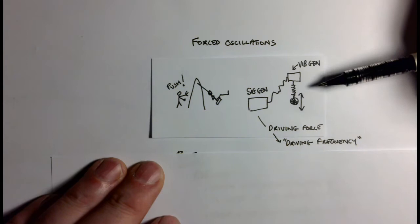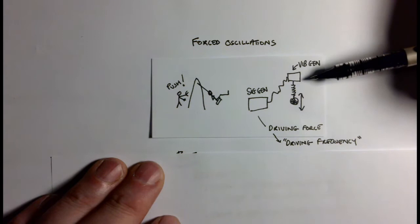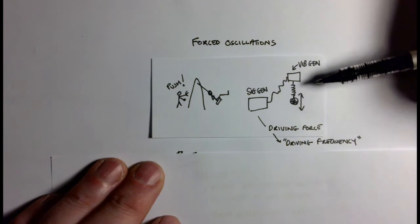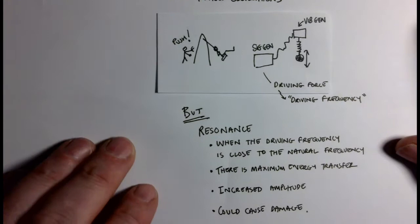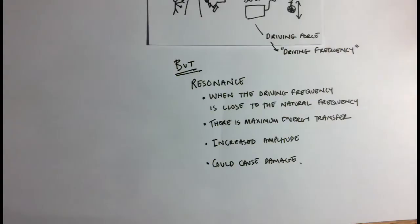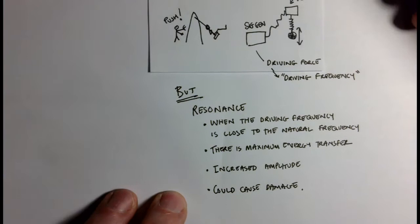This is given a name: resonance. Resonance is when the driving frequency, in this case provided by the signal generator or by the person pushing the other one on the swing, when that driving frequency is close to the natural frequency, you get a maximum energy transfer, and that increases the amplitude of the oscillations.